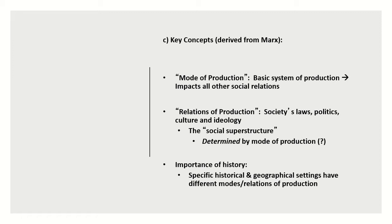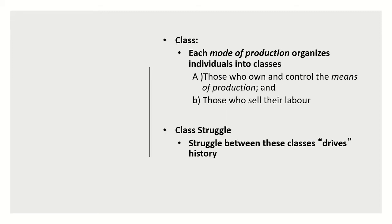In a capitalist society, the mode of production drives that society's laws, politics, culture, and identity. Each mode of production organizes individuals into different classes. In capitalism, those classes are those who own and control the means of production — the capitalists or bourgeois — and those who sell their labor to the capitalists — the proletariat. This class struggle between classes is what Marx suggests drives history.